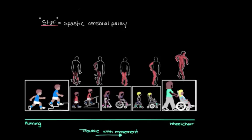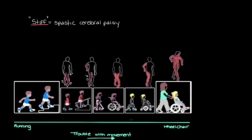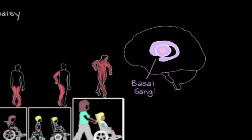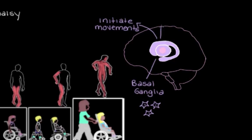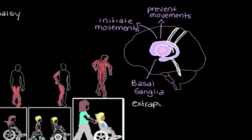The next movement center that can be damaged or impaired in someone with cerebral palsy is the basal ganglia. The basal ganglia is actually a collection of individual nuclei — clusters of neuron cell bodies. They work together to help us initiate the movements we want to make and help prevent the movements we don't want to make. To do that, they use highways of neurons called the extrapyramidal tracks to send messages to other brain structures that ultimately help control our muscles.